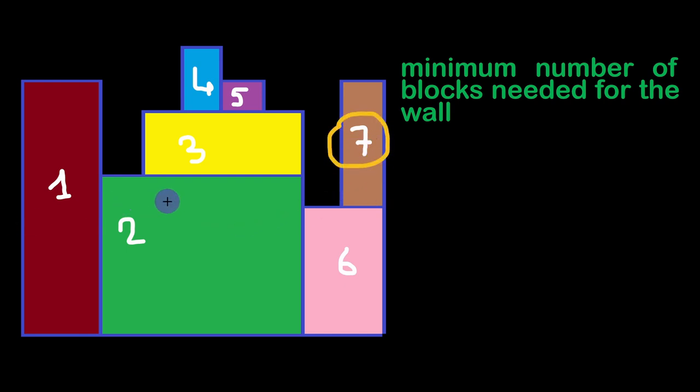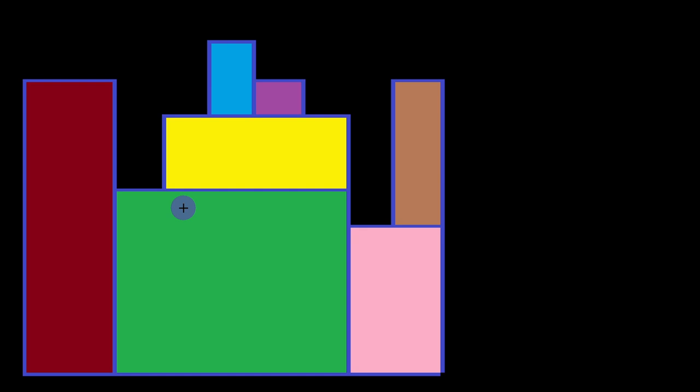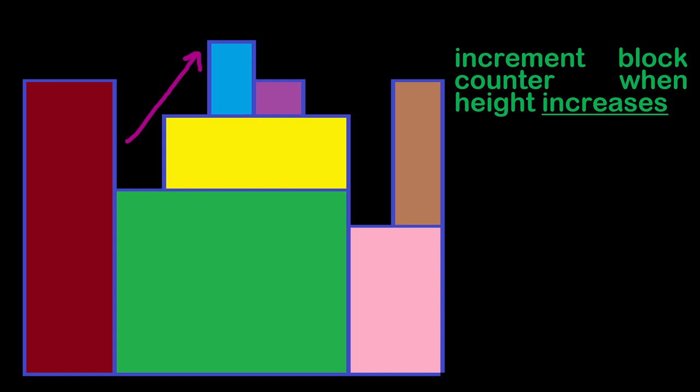The way we are going to solve this is the following. We have to distinguish between two cases. The first is where we have increasing levels, meaning consecutive heights in the array are in increasing order. In this case we simply increment the number of needed stones, because there is no other way to go from one level to a higher level except by adding one additional stone.